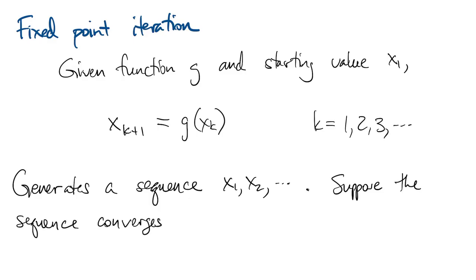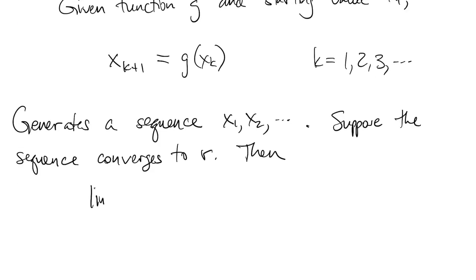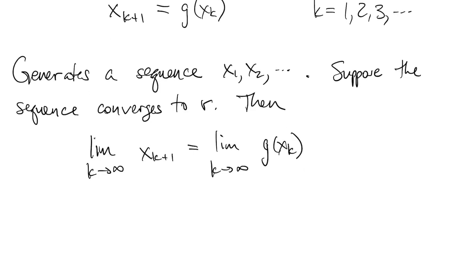If the sequence converges to a value r, then we can take the limit of both sides of the fixed point iteration equation, and we show that r is equal to g of r. So if the limit exists, it must be a fixed point.